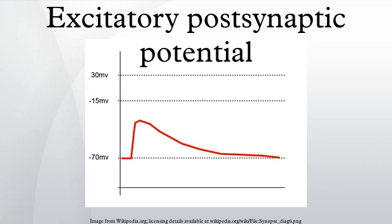EPSPs are usually recorded using intracellular electrodes. The extracellular signal from a single neuron is extremely small and thus next to impossible to record in the human brain. However, in some areas of the brain, such as the hippocampus, neurons are arranged in such a way that they all receive synaptic inputs in the same area. Because these neurons are in the same orientation, the extracellular signals from synaptic excitation don't cancel out, but rather add up to give a signal that can easily be recorded with a field electrode.